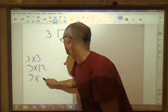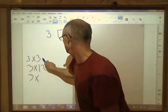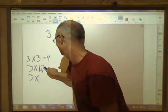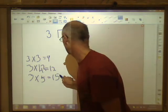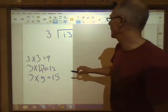That's 9, that's 12, and 3 x 5 = 15. That's too many. So it's got to be four.